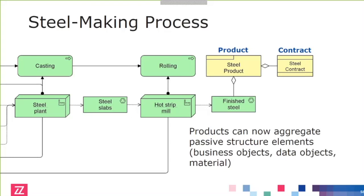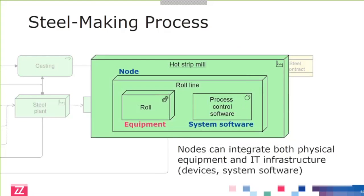That's one other example of an improvement. If we then zoom in on one of these parts of the process — the hot strip mill — we see that there's much more detail inside. There's what they call a roll line, where they roll the steel. That's the physical equipment, but it's controlled by process control software. This is a very high-level overview, but here you already see that you can combine the physical and the IT world into one single node that combines the two, and lets you model these integrated IT and physical equipment.